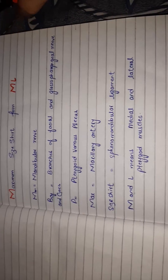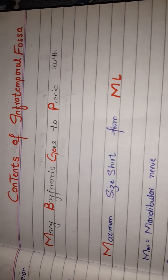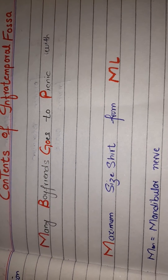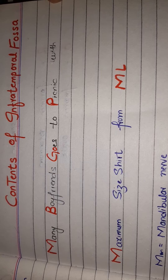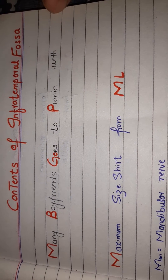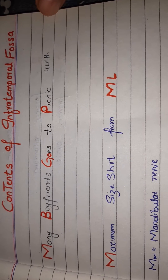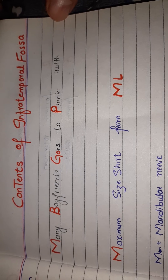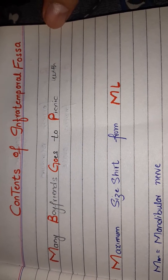The mnemonic for the contents of the infratemporal fossa is: 'Many boyfriends goes to picnic with maximum size shirt from ML.' 'Man' in 'Many' stands for the mandibular nerve, while 'boyfriends goes' stands for the branches of the facial nerve and glossopharyngeal nerve — meaning the chorda tympani and the lesser petrosal nerve.